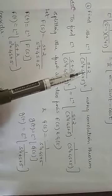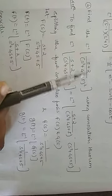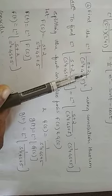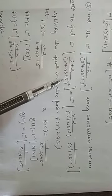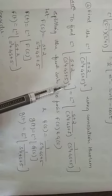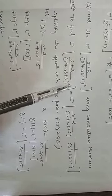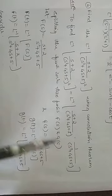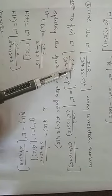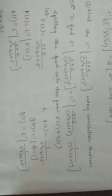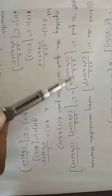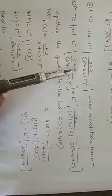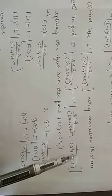Take note here: do not split this as (s) upon (denominator) and (2) upon (denominator) — that is wrong. What we have to do is take (s+2) as one term divided by (s²+4s+5)², and split only the denominator's square into two factors. Do not split the numerator.